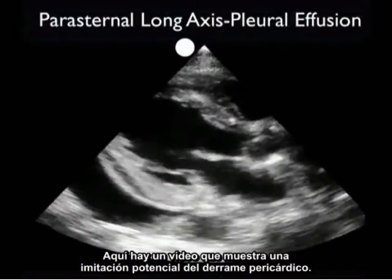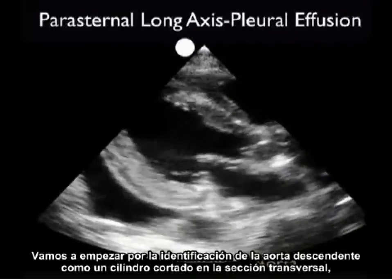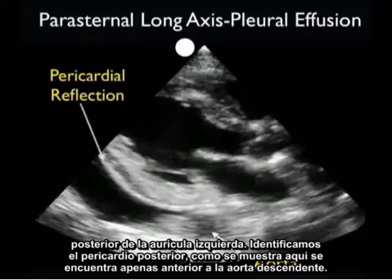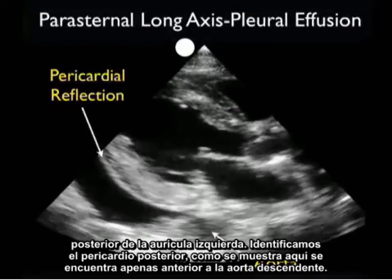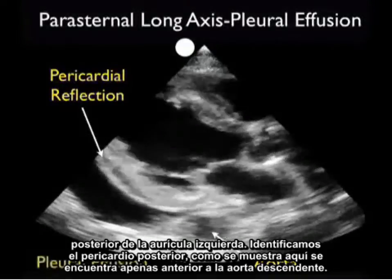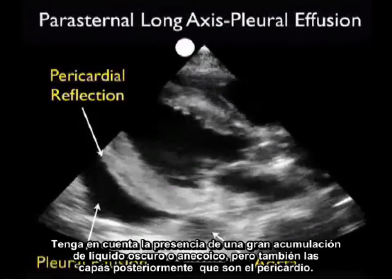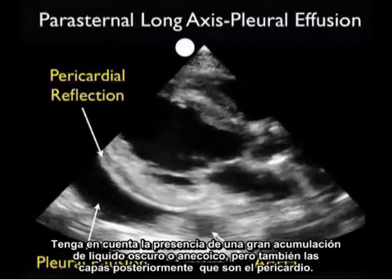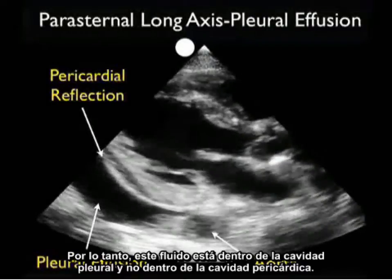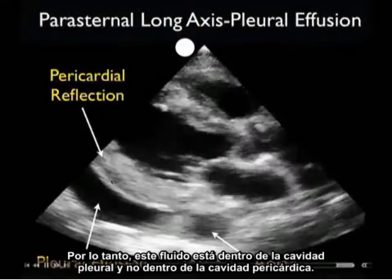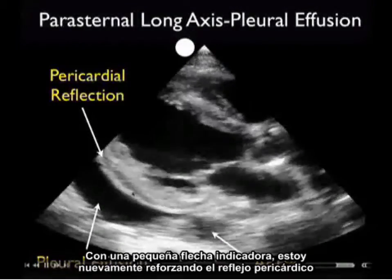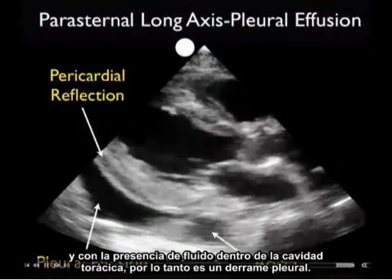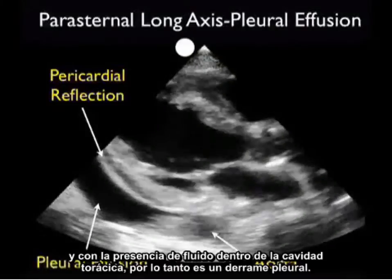Here's a video clip showing a potential mimic of a pericardial effusion. We identify the descending aorta as a cylinder cut in cross section posterior to the left atrium, and the posterior pericardium coming off just anterior to the descending aorta. Note the presence of a large dark or anechoic fluid collection, but note that it layers out posteriorly to the pericardium — thus this fluid is within the pleural cavity and not the pericardial cavity, representing a pleural effusion.